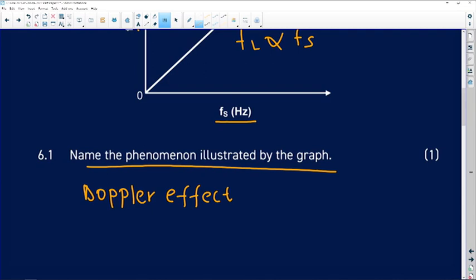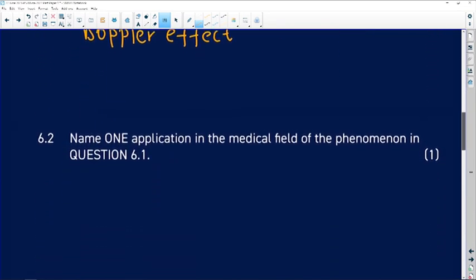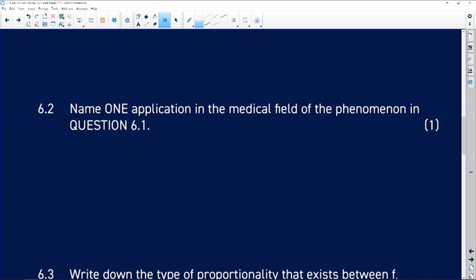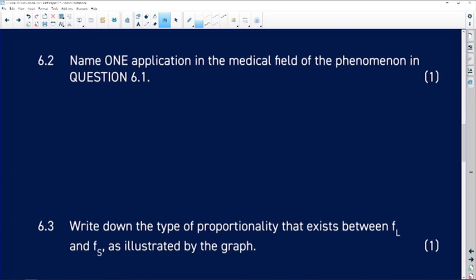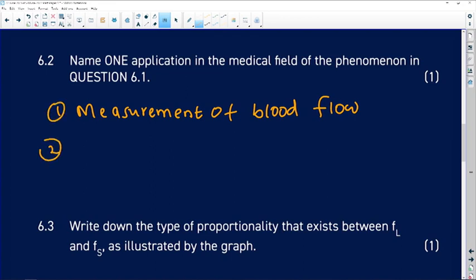What they can also ask you here is to define Doppler effect. Let's go to 6.2. It says here name one application in the medical field of the phenomenon in question 6.1. So what do we then use Doppler effect in the medical field? It's only for one mark here, but please remember that they can ask two or three in the exam. The first one that we need to know is for the measurement of blood flow.